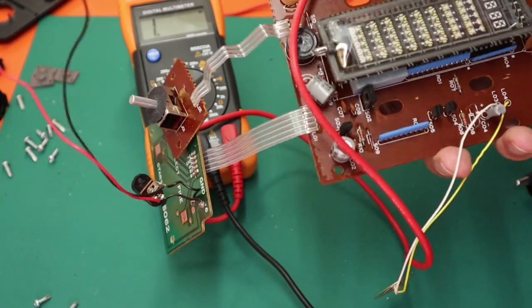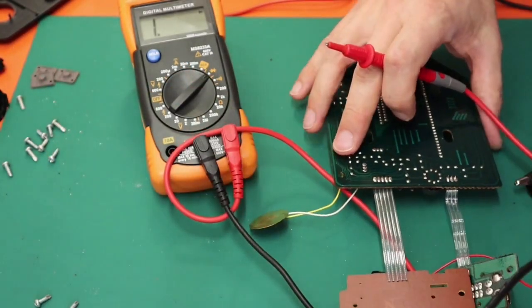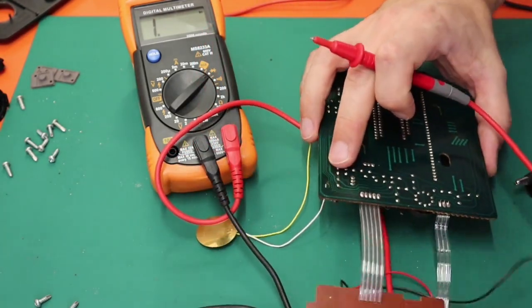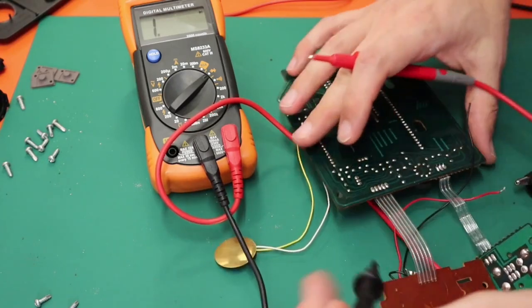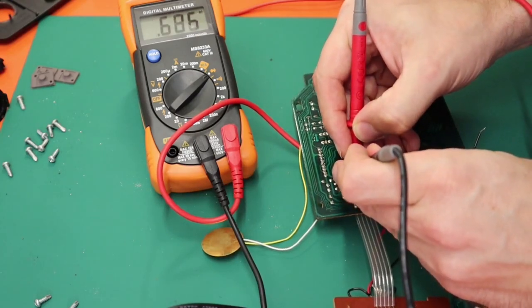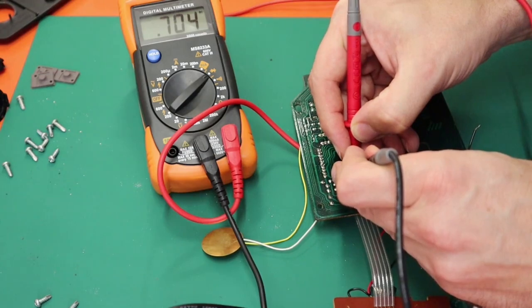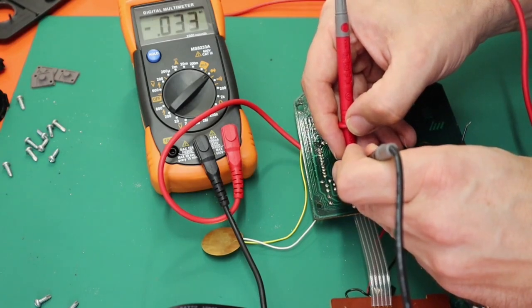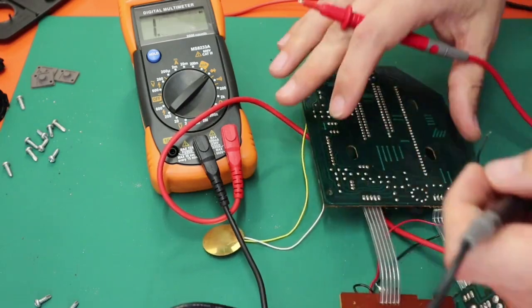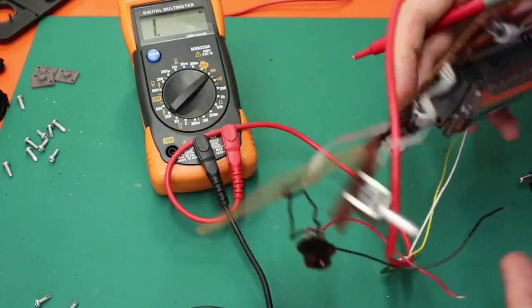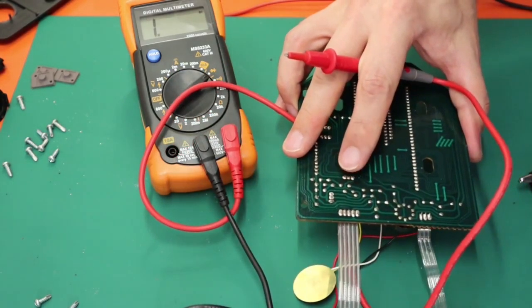Knowing this is an NPN transistor, the base is going to be positive, and on this one it is. With my meter on diode check, I get 0.6 or 0.7 of a volt voltage drop between base and one of the pins, but zero voltage drop to the other one. So looking at that, that looks like a short between the base and the emitter. So I'm going to go ahead and take this transistor out and test it on the bench.